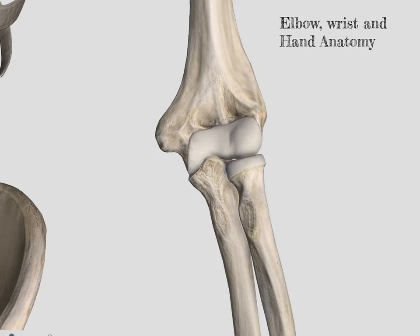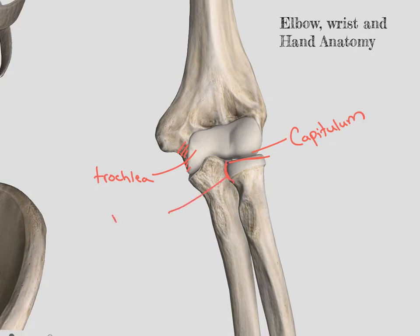The articular surfaces on the humerus: on the radial side, we have our capitulum, and that articulates with our radial head. And then on the ulnar side, we have our trochlea, which runs all the way along on the lateral aspect as well. The gap on the ulna where the radius sits is called the radial groove, allowing space for the radius to pivot against the ulna.